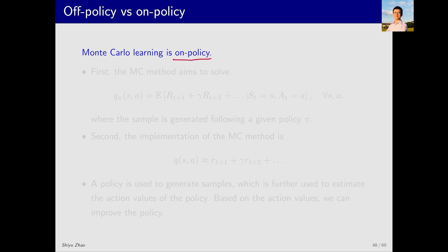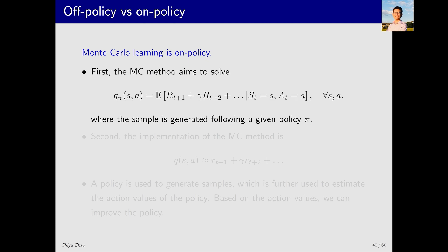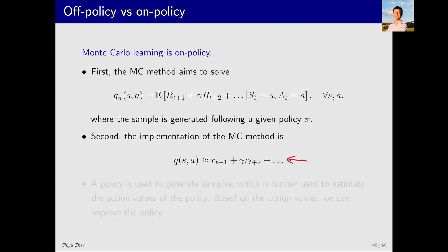Next, let's consider Monte Carlo learning — it is also on-policy. The concepts of on-policy and off-policy are not restricted to TD algorithms but apply to all RL algorithms. The MC method estimates the action value by generating a full episode trajectory under a policy pi, calculating the return, and using it to approximate Q^pi. That estimated Q^pi is then used to improve pi, so pi serves as both the behavior policy and the target policy — making MC on-policy.